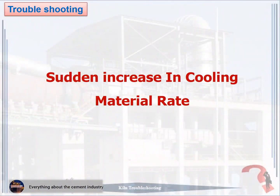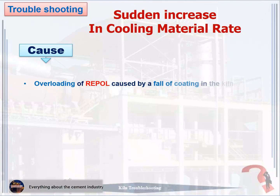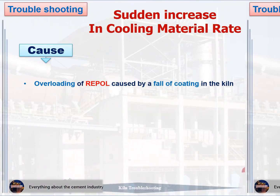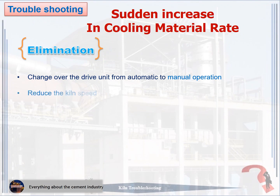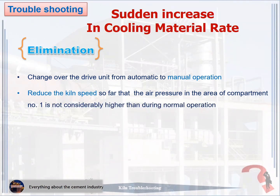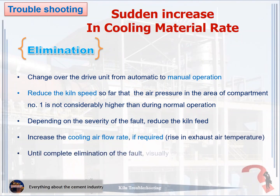Problem 4: Sudden increase in cooling material rate. The cause: overloading of the repole caused by a fall of coating in the kiln. How to eliminate: one, change over the drive unit from automatic to manual operation. Two, reduce the kiln speed so that the air pressure in the area of compartment number 1 is not considerably higher than during normal operation. Three, depending on the severity of the fault, reduce the kiln feed. Four, increase the cooling air flow rate if required, noting rise in exhaust air temperature. Five, until complete elimination of the fault, visually check the grates.